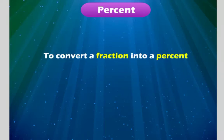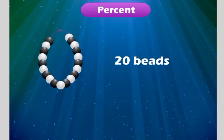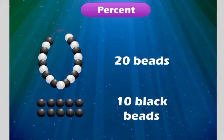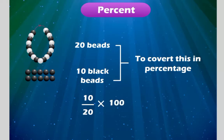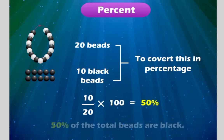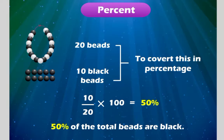To convert a fraction into a percent, we multiply the fraction by hundred and place the percent symbol. In the beads example discussed in the beginning of the chapter, the fraction of black beads is 10 by 20. To convert this in percentage, we multiply the fraction of black beads with hundred. So, 10 by 20 into hundred is equal to 50 percent. Thus, 50 percent of the total beads are black.